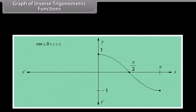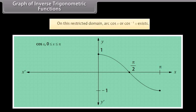The derivations of the graphs of arc cos x and arc tan x are similar to that of arc sin x. In both instances, intervals must be restricted. For arc cos x, we use the [−1, 1] piece, and on this restricted domain arc cos x (cos⁻¹ x) exists.